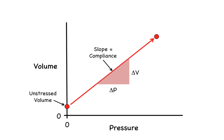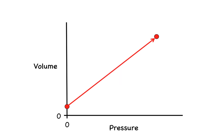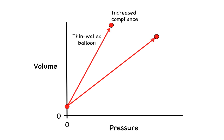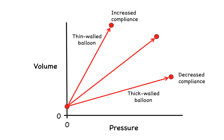Let's now see what happens when compliance is altered. Remembering that compliance is the slope of the volume-pressure relationship, if the rubber wall of the balloon were very thin and easily stretched, then pressure inside the balloon would not increase as much when the balloon is inflated. This change in slope reflects an increase in the compliance of the balloon. In contrast, if the rubber wall were very thick and therefore resisted stretching, then the balloon pressure would change much more for a given increase in volume, because the compliance of the balloon would be reduced.